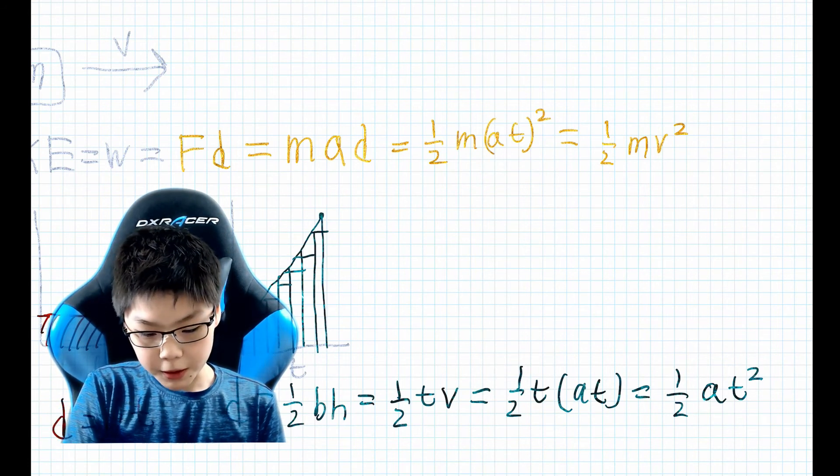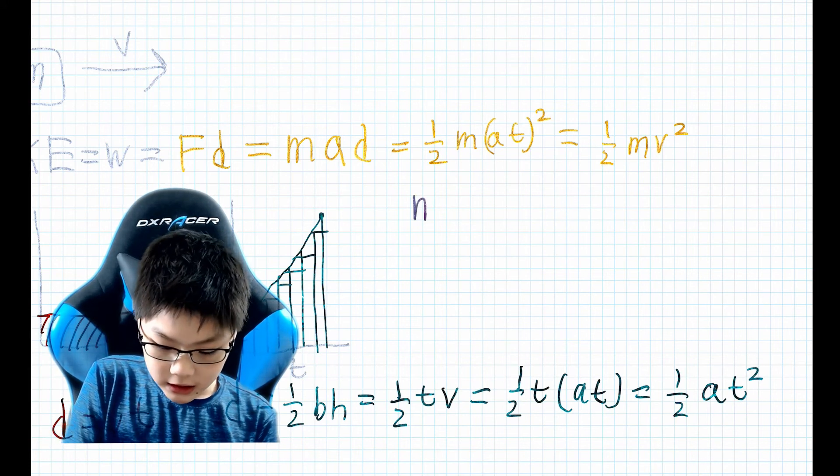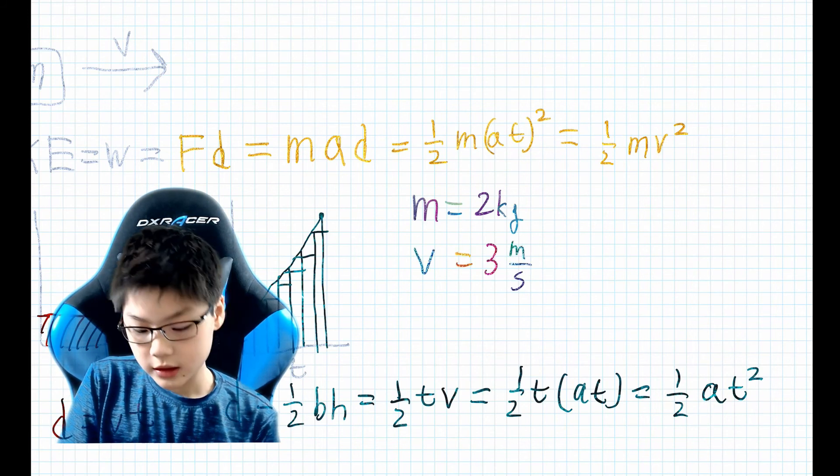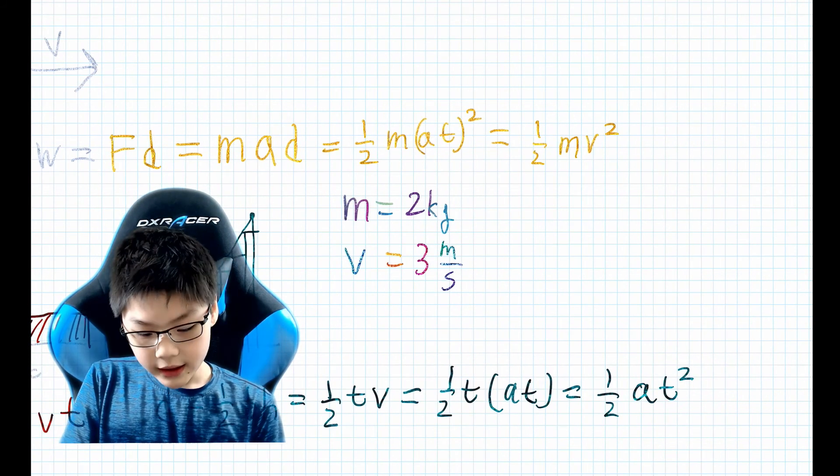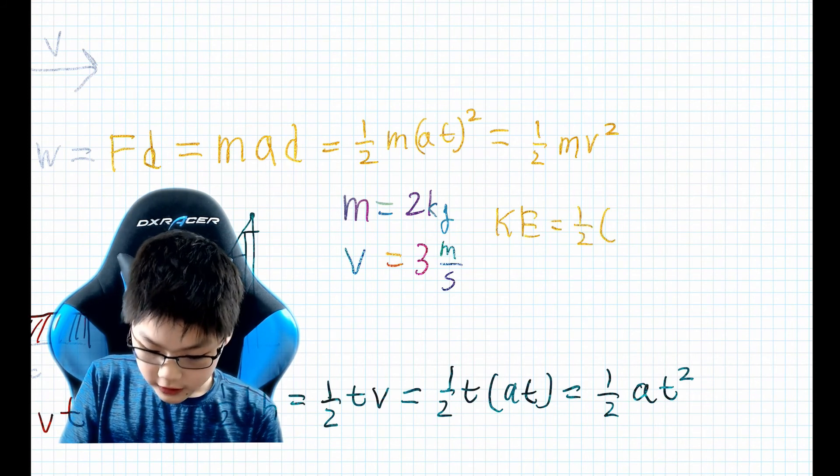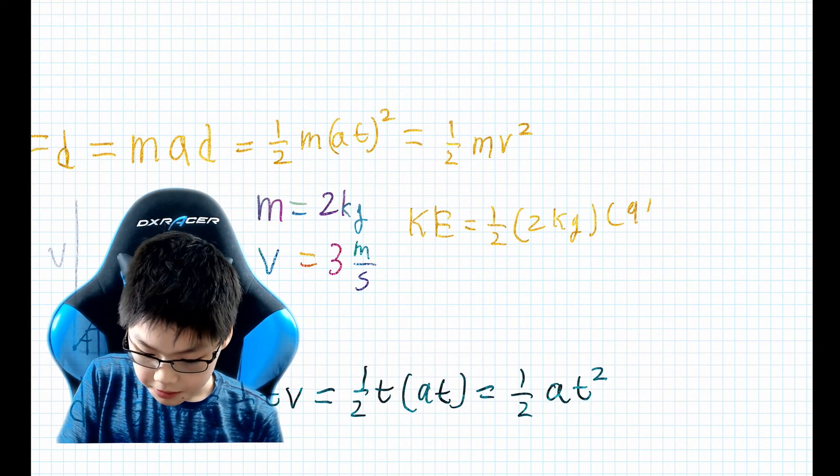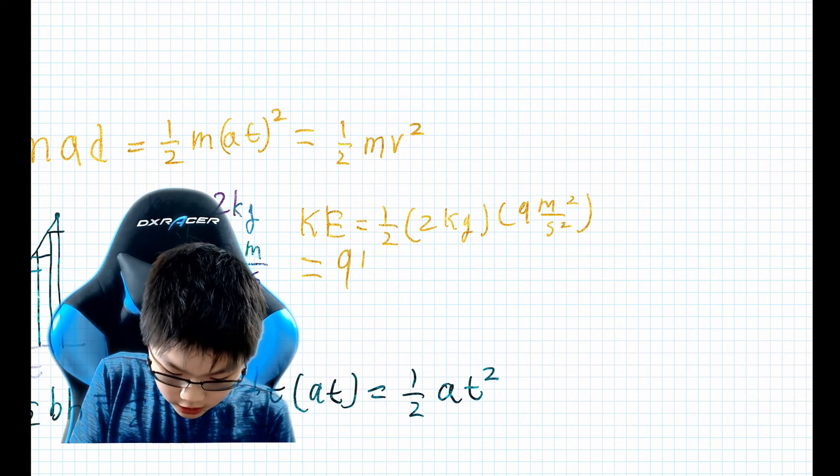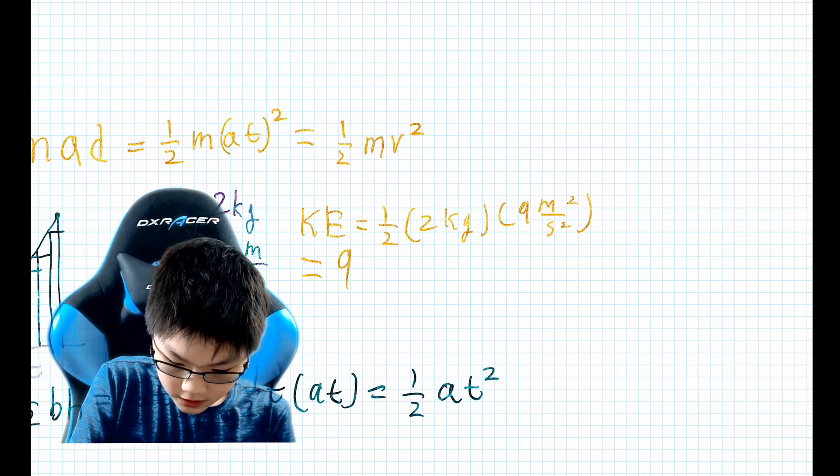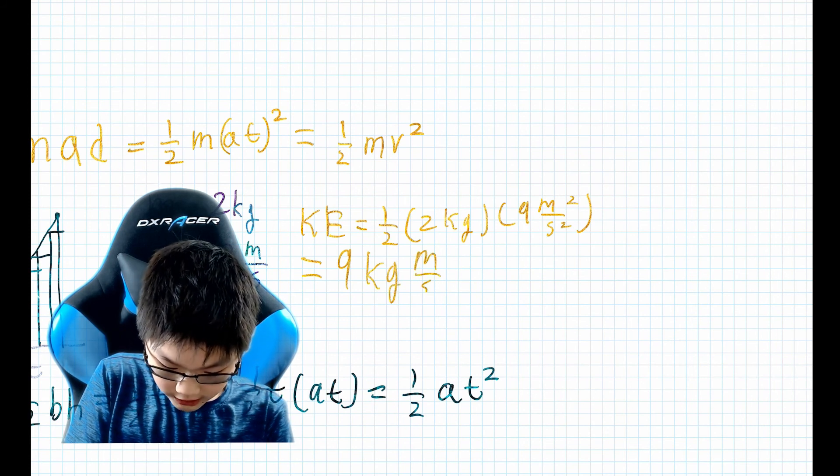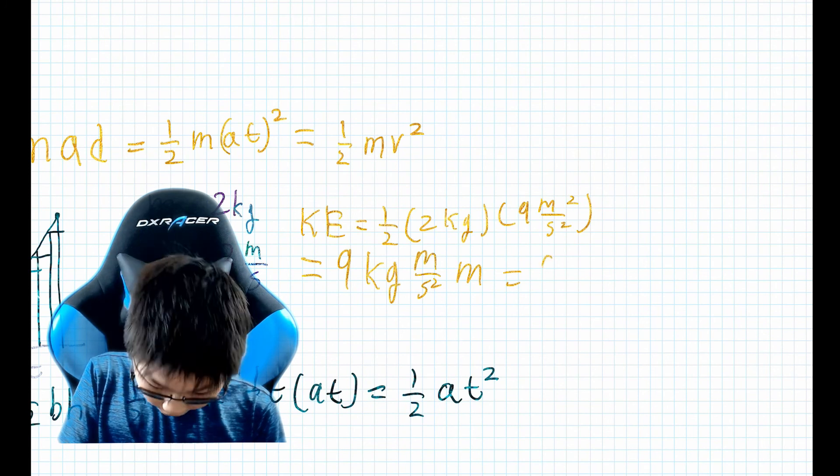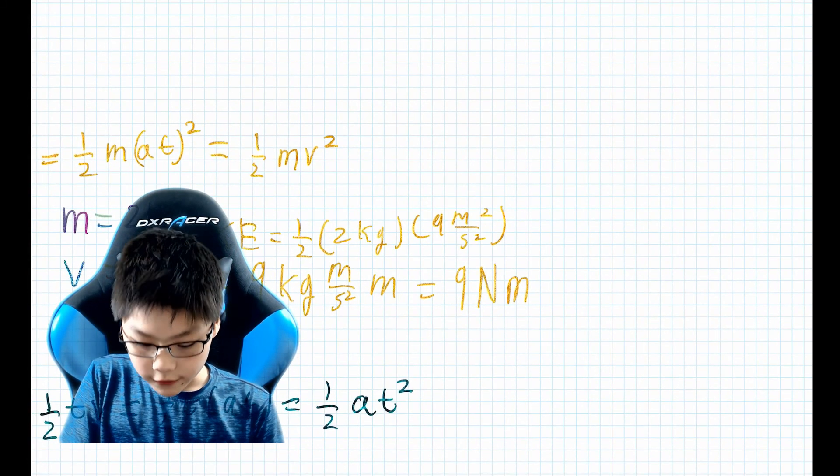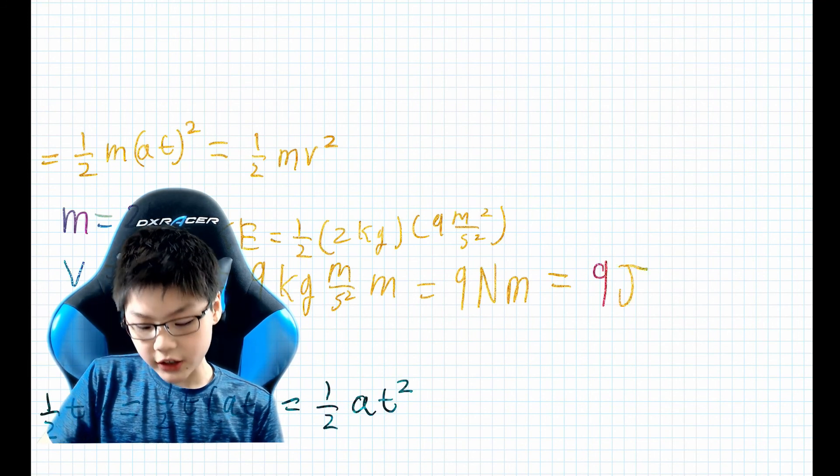Now let's put some numbers into this. Supposing we have a mass of two kilograms and a velocity of three meters per second, that means that the kinetic energy is going to be equal to one half times two kilograms times nine meters per second squared. That will give us nine - kilogram meter per second squared is a Newton - so that's going to be nine Newton meters. And that will give us nine joules because a Newton meter is a joule.